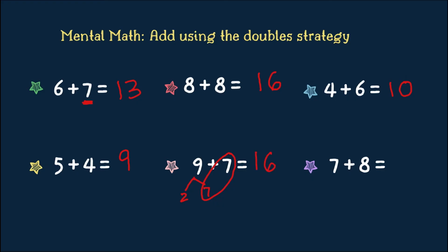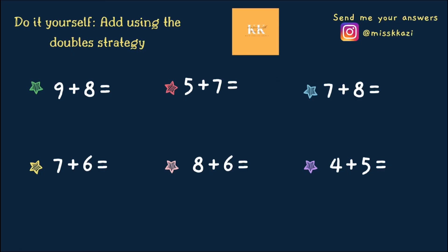Let's do the next one mentally. 7 plus 8. 7 plus 7. Double 7 is 14. 14 plus 1 gives you 15. I hope that was easy. Just keep practicing and you will get it. Try to do this by yourself and using the double strategy. The link for this will be in the description box below. Send me your answers on Instagram at MissKKazi. I hope you had a great math lesson with me.